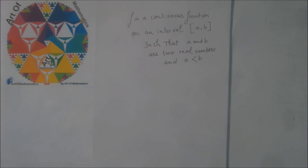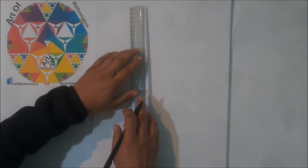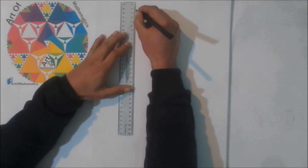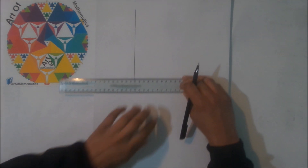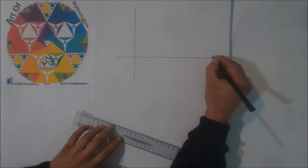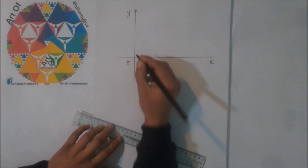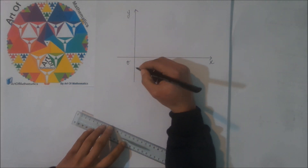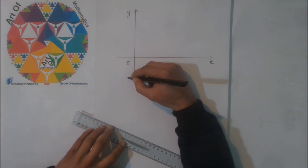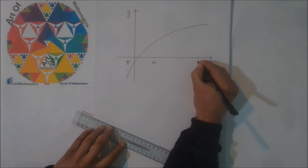Now let's sketch the graph of a function f, continuous on the interval A to B. Suppose that our graph is like this. This is A and this is B.